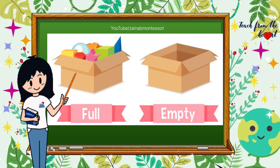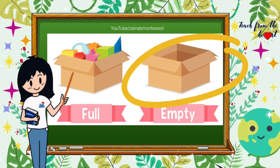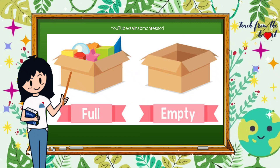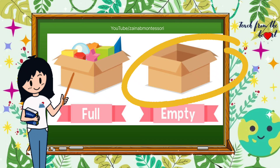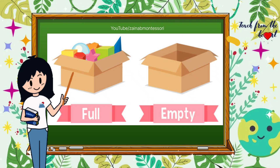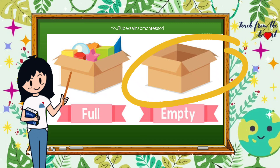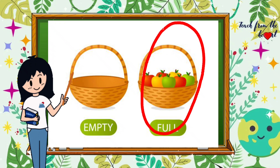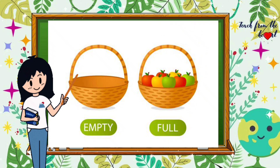That box doesn't have toys, it's empty. This box is empty — it doesn't have any toys. And this basket is full with apples. This basket has nothing, and this basket is full with apples — so it's full.